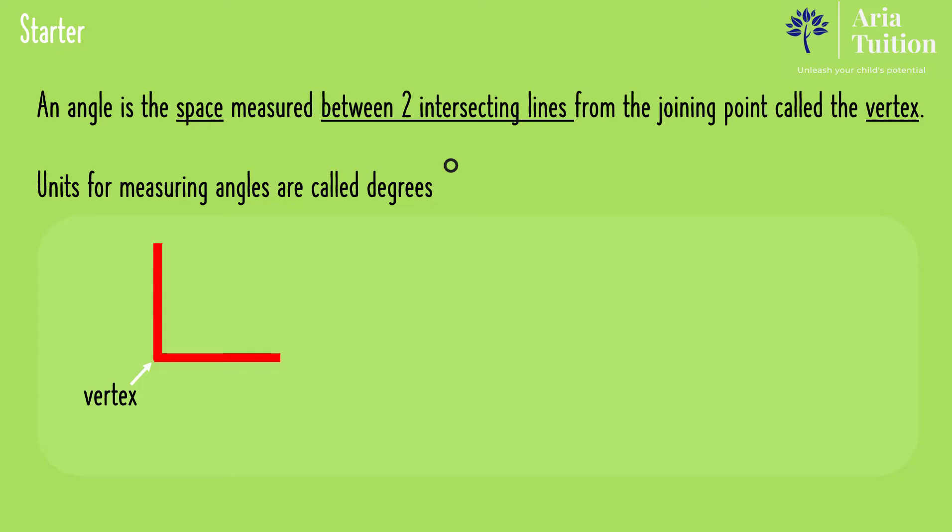This angle is called a right angle and has 90 degrees. This angle is called an acute angle and is less than 90 degrees. This is an obtuse angle and is greater than 90 degrees.